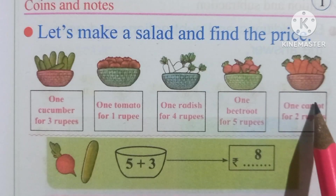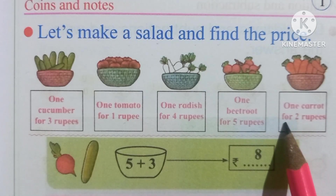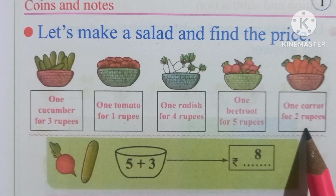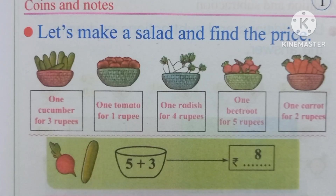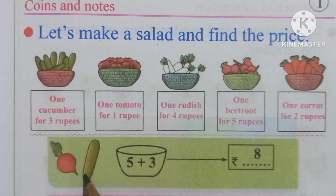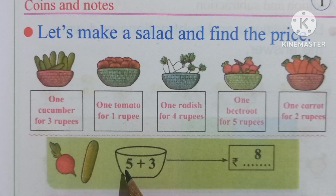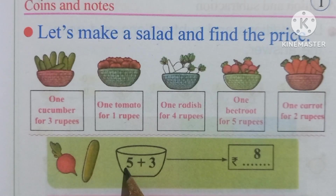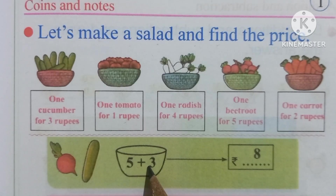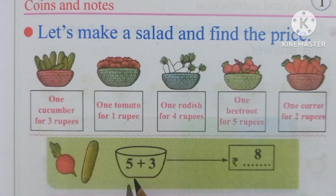Here are carrots — the price of one carrot is Rs. 2. We have to make a salad of 1 beetroot and 1 cucumber. The price of one beetroot is Rs. 5, and the price of one cucumber is Rs. 3. We have to pay a total of Rs. 8.